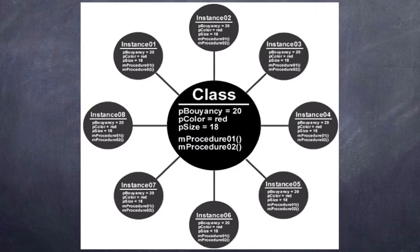Every instance has a buoyancy of 20, a color of red and a size of 18. Now, of course, using methods or properties we can change these so that maybe some instances have a buoyancy of 30 or some have a buoyancy of 5. We can change the color of some instances and we can do all this using methods which I'll talk about in an upcoming section.